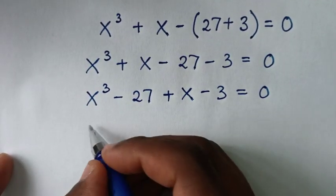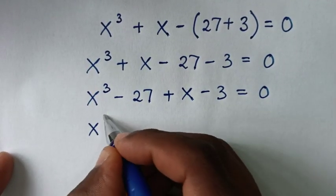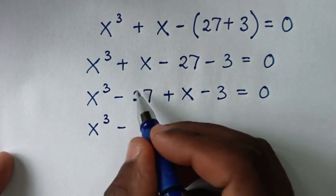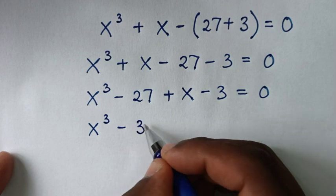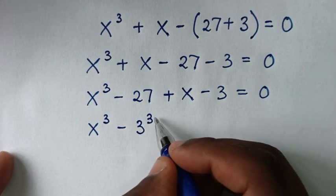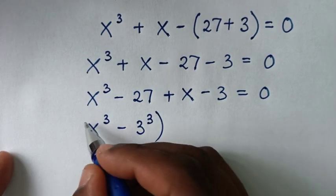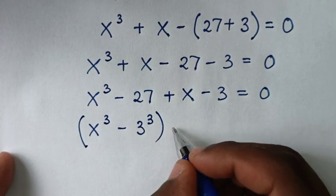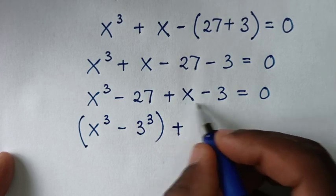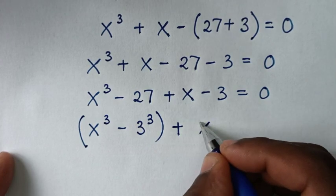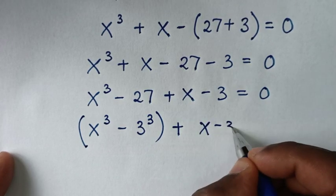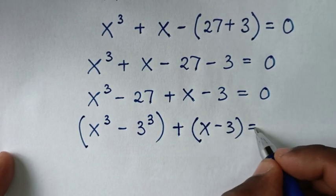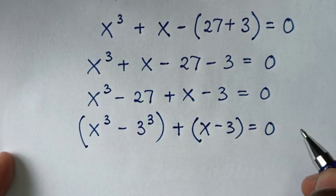Now x³ - 27 is the same as x³ - 3³. These have the same power of 3, and we also have the term x - 3, so we can factor this expression.